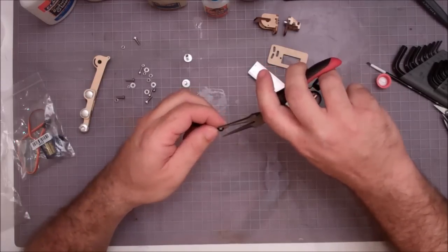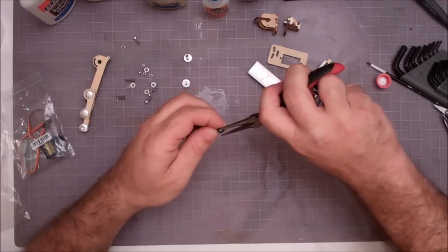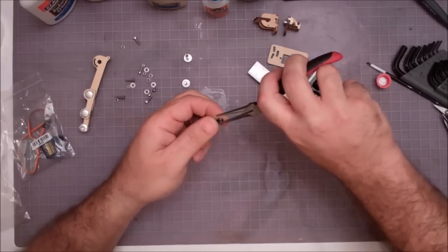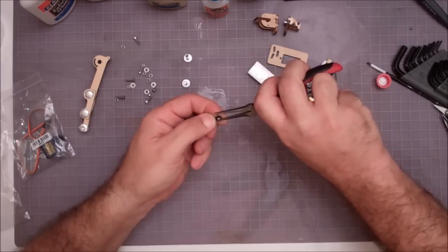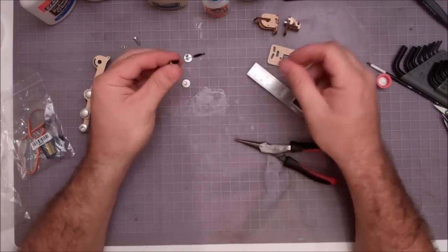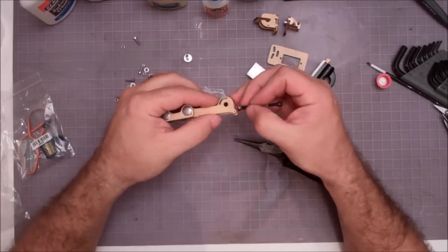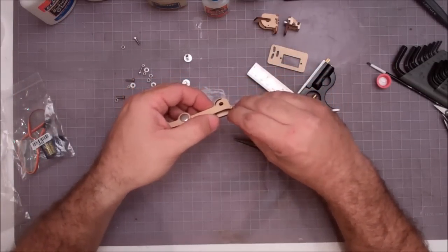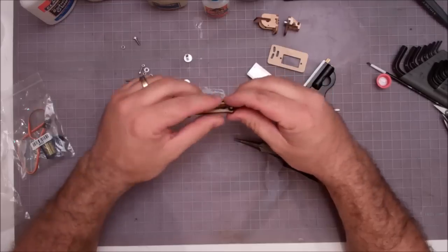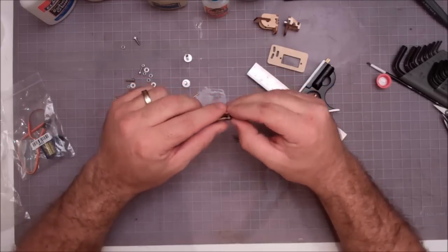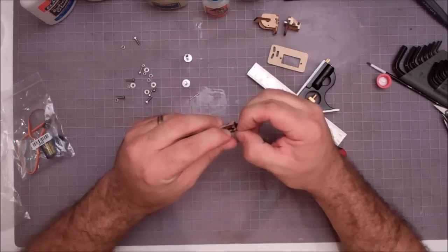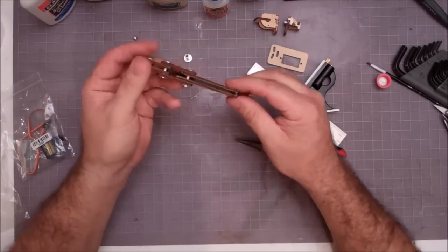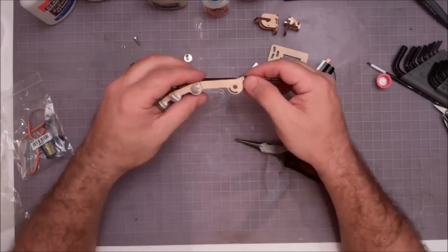Now this whole link piece can be inserted back into our finger. So we just kind of slide it in one side and then kind of pry the finger open a little bit and slide it in the other side. There you go, that's our driving link that runs the finger. Again, finger still moves nicely.